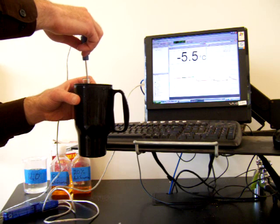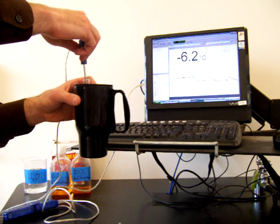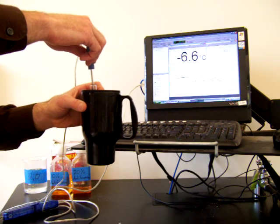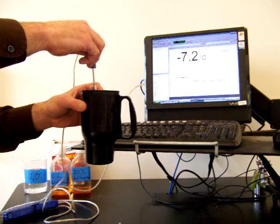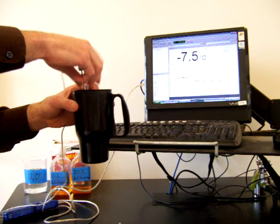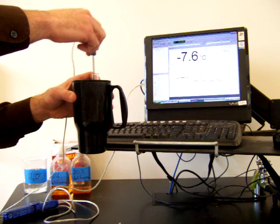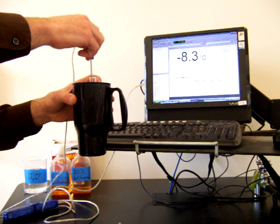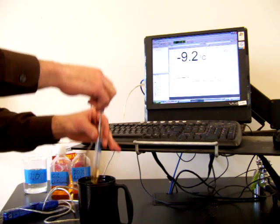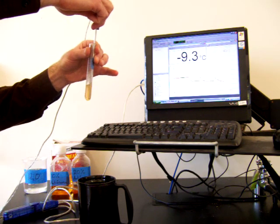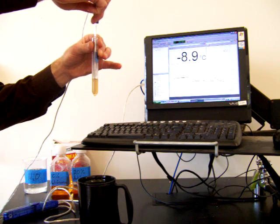So this one's probably going to freeze at a temperature lower than our 10% antifreeze solution. Remember, that one froze at negative 4.2 degrees Celsius. Just mix it around here in our ice bath. Let me peek in and see if any ice crystals are forming yet. We see ice crystals are forming right here.